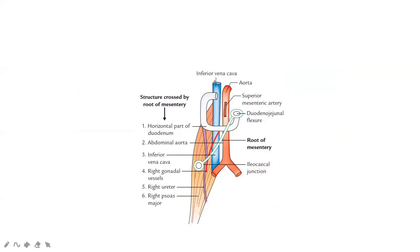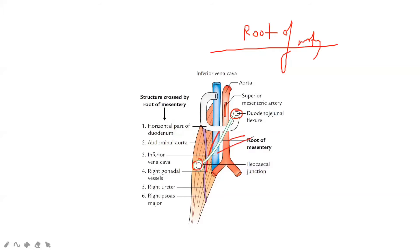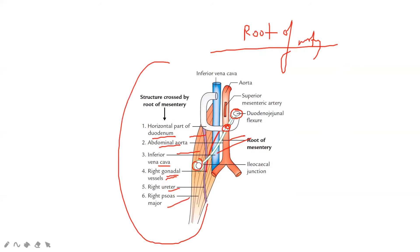This is the root of mesentery and its relations. The mesentery starts from the DJ flexure and ends here. The structures crossing it are: the aorta, the inferior vena cava, the right gonadal vessels, the right ureter, the right psoas muscle, and the duodenum. The length of the root of mesentery is 15 centimeters and the breadth is 20 centimeters.